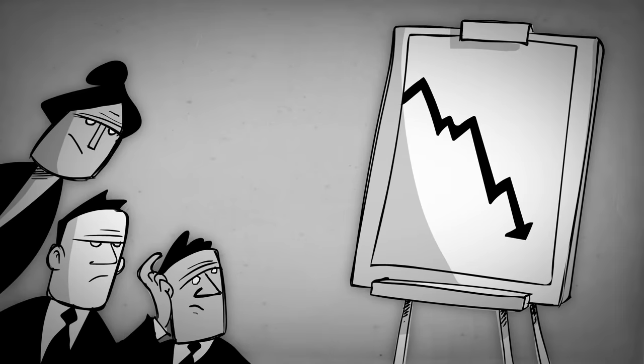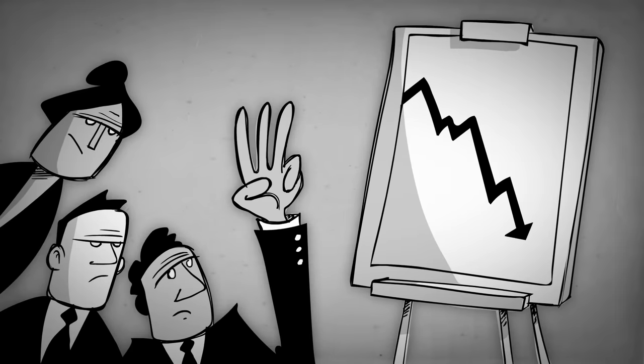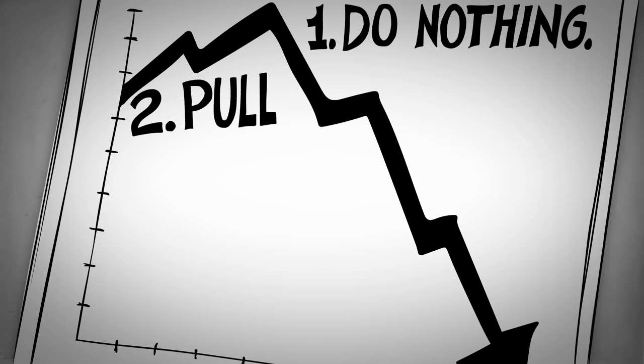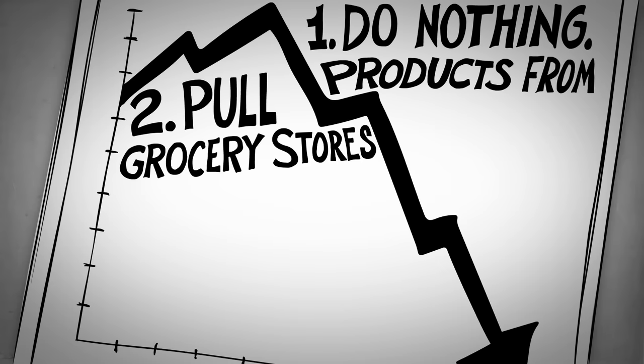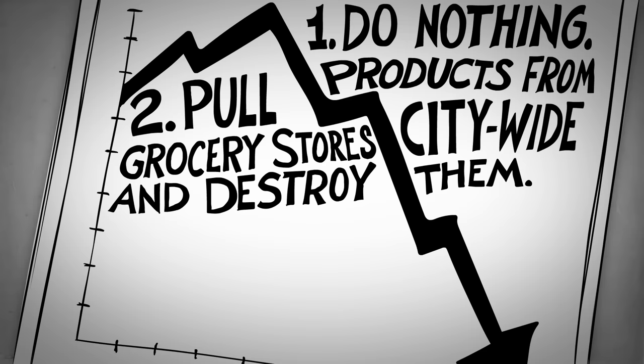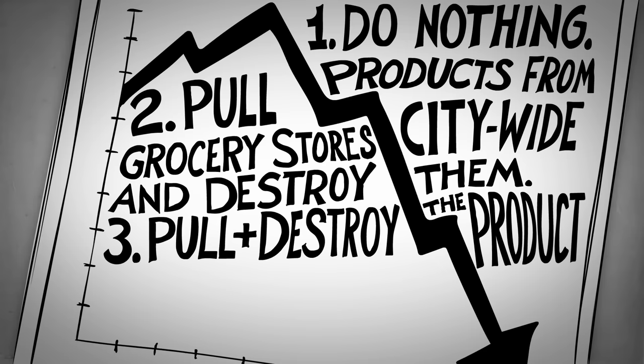Your team comes up with three options. One, do nothing. Two, pull the products from grocery stores citywide and destroy them. Or three, pull and destroy the product worldwide.